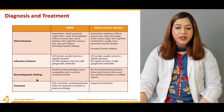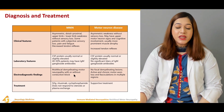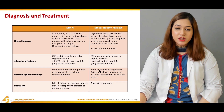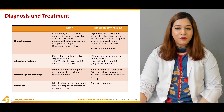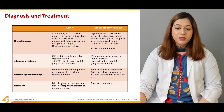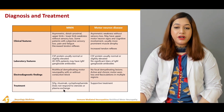Regarding electrodiagnostic findings, MMN shows multifocal demyelinating motor neuropathy with or without conduction block, which is pathognomonic. In motor neuron disease, there are no focal demyelinating lesions; instead, active and chronic motor axon loss and fasciculations in multiple regions are found. Multifocal motor neuropathy is treated with intravenous immunoglobulins, rituximab, and cyclophosphamide, and does not respond to steroids or plasma exchange. Only supportive treatment is available for motor neuron disease.